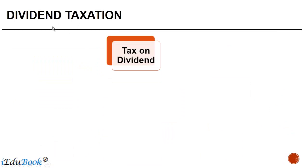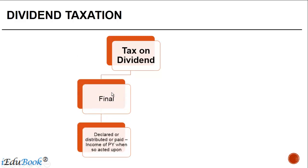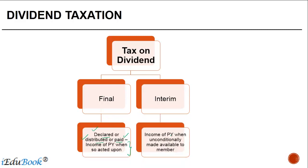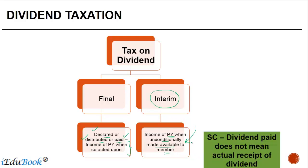Looking at the general rule for dividend taxation — not the specifics of the India-US treaty — the general rule is that if there is a final dividend declared, distributed, or paid by an Indian company, it is treated as the income of the previous year when the declaration, distribution, or payment happens. If there is an interim dividend, it is treated as the income of the previous year when it is unconditionally made available to the member, since interim dividend may be changed.